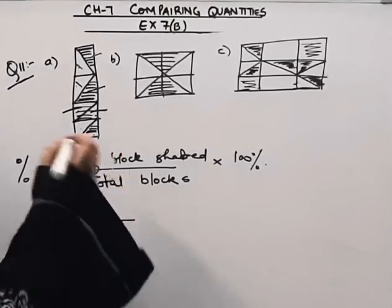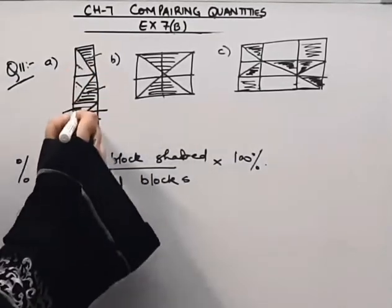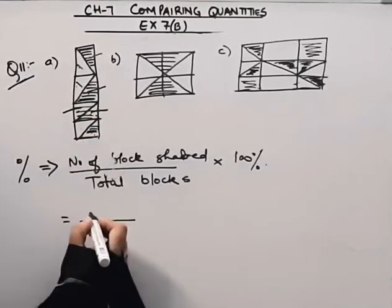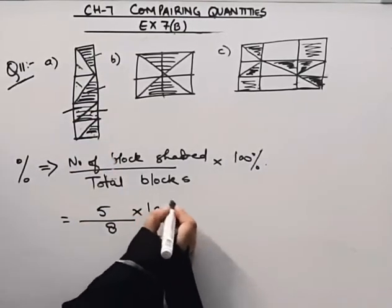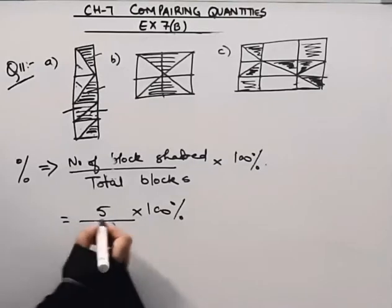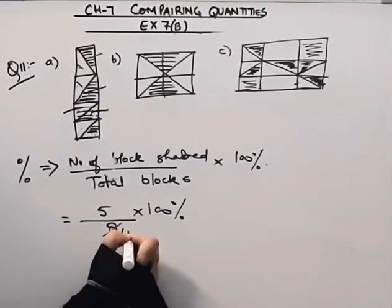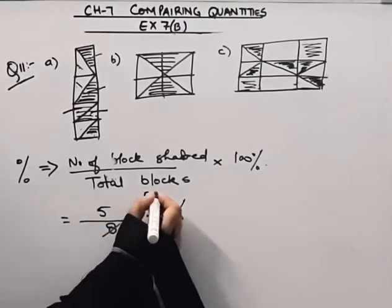Now we will find out number of blocks shaded. 1, 2, 3, 4, 5. Here we have 5 blocks multiplied by 100 percentage.